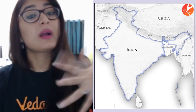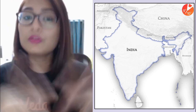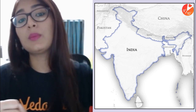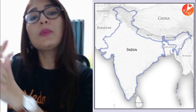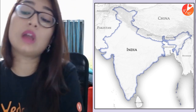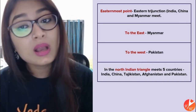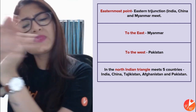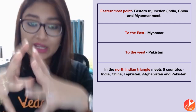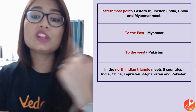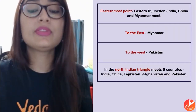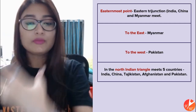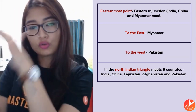In India's west is Pakistan, our neighbor since partition in 1947 when it was part of our country. On that side you can see Tibet, Nepal, and China. On the eastern side, at the foot of the Himalayas, we have Myanmar. At the easternmost point there is a tri-junction where three countries meet: India, China, and Myanmar.